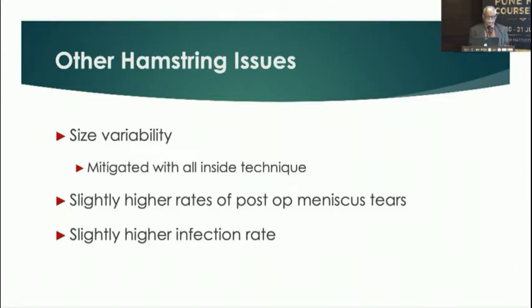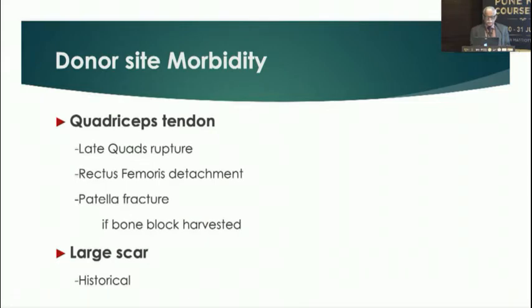Studies have shown higher rates of postoperative meniscal tears and infections with hamstrings. Donor-side morbidity with quadriceps tendon includes late quadriceps rupture, rectus femoris detachment, and patellar fracture — especially when a bone block is harvested. Large scars were previously a concern, but with current techniques the incision for quadriceps tendon harvesting is quite small.